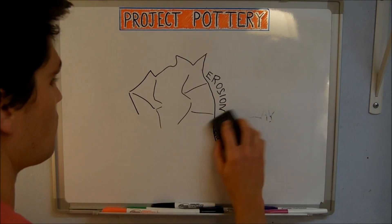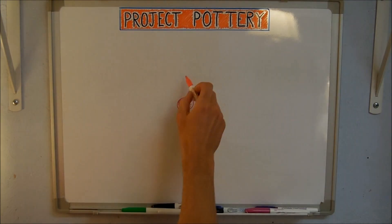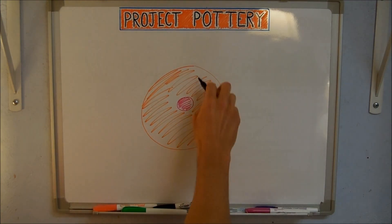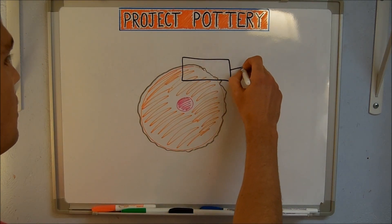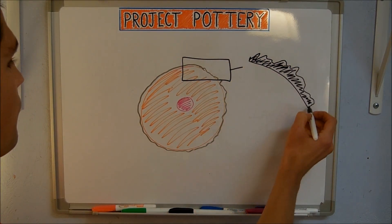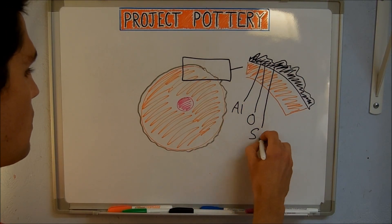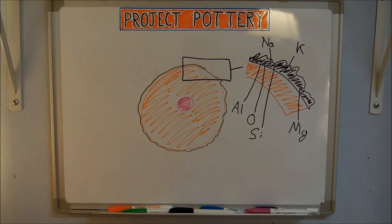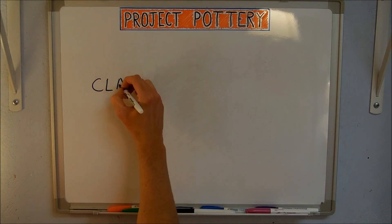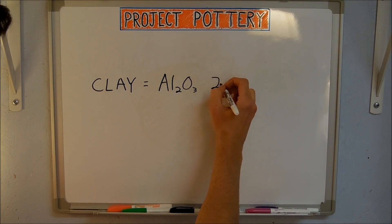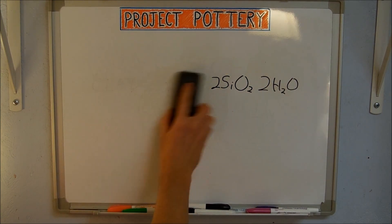What is clay? In short, it's eroded rock. Here's how it goes. Cooled magma from the earth's core forms a rocky crust that we call the mantle. This rock layer is embedded with lots of elements and mineral compounds, mainly silicates. Chemically, clay is a hydrous aluminum silicate — a chemical compound made from aluminum oxide, silicon dioxide, and water.